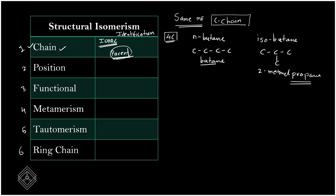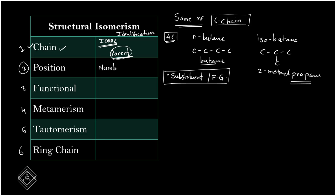The second type is position isomerism. This occurs when the position of either a substituent or a functional group changes. In the IUPAC name, a locant number is assigned; when that locant number changes while the rest of the name stays the same, it indicates position isomerism.